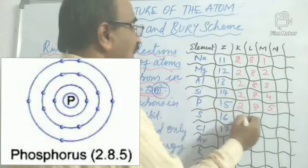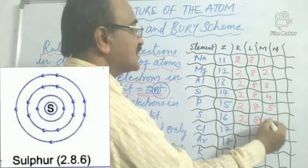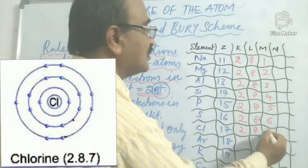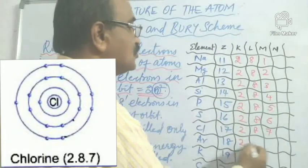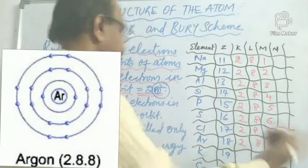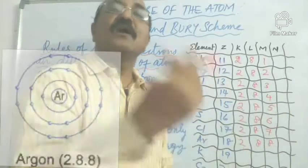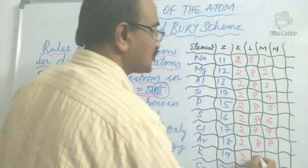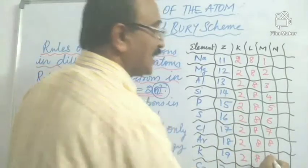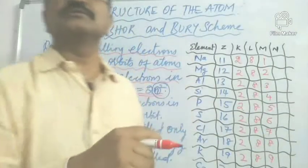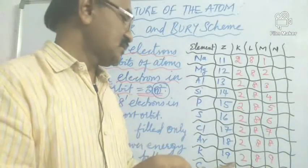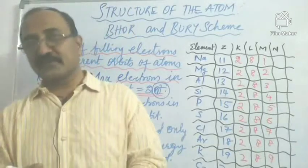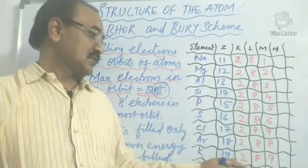Continuing: sulfur is 2, 8, 6. Chlorine is 2, 8, 7. And argon is 2, 8, 8. Now you see what happens with potassium. If we write 2, 8, 9 — that is wrong. That is the wrong representation of the electronic configuration for potassium. And here you come to what is called the importance of rule two.